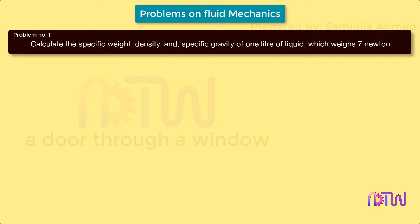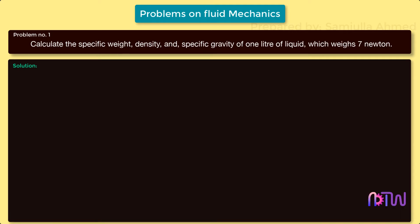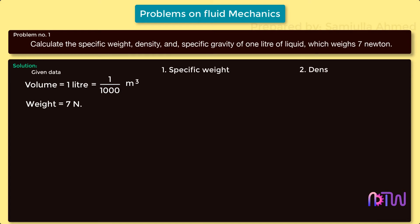This problem asks us to calculate specific weight, density, and specific gravity of a given liquid with a weight of seven newtons and volume of one liter. Solution — first, write the given data: volume of the liquid is one liter, which we convert to 1/1000 cubic meters. Weight of the liquid is seven newtons.